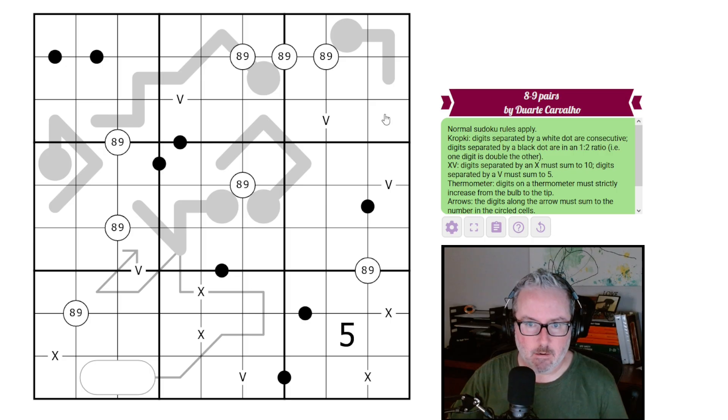So it's called eight, nine pairs. I think we have a pretty good reason why that's the case. It's by Duarte Carvalho. Let's just take a check at what the rules are. So normal Sudoku - every row, column, and three by three box will contain the digits one through nine once each.